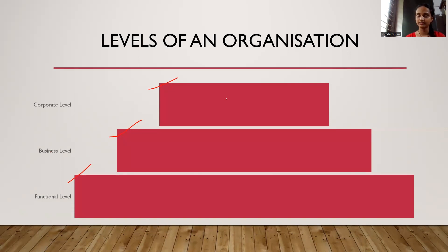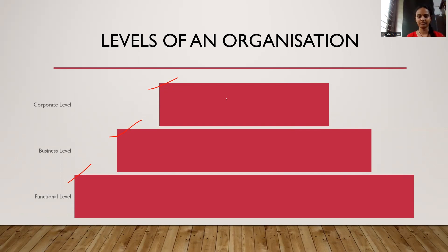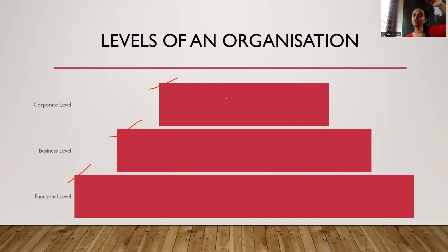Then, what are strategies? Strategies can be anything. In simple words, they are just plans that the organization makes to achieve their goals, their objectives, and also to sustain in the long run. So basically, corporate level strategies are the strategies taken by the people in the corporate level — the topmost level of an organization.